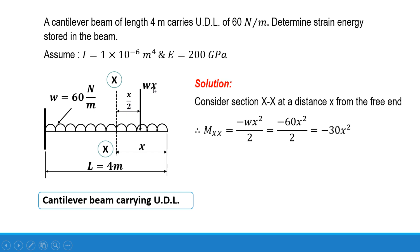So w × x multiplied by x/2, that is wx²/2. As it is a clockwise moment, in case of cantilever beam clockwise moments are considered as negative. So we can say that moment at section XX is -wx²/2. Value of w, the uniformly distributed load, is 60. So it is 60x²/2. 60 by 2 is 30, so it is -30x².